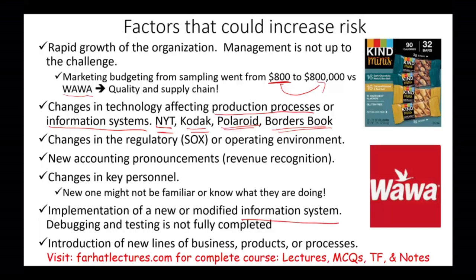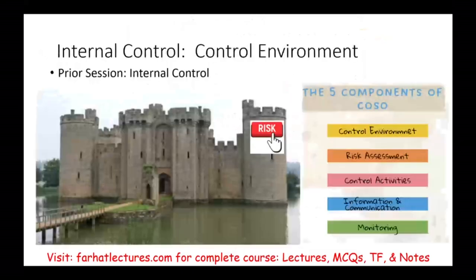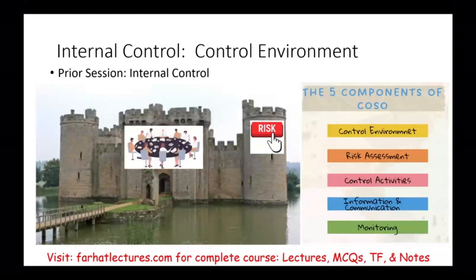All of these are factors that could increase the risk of financial reporting. In this session we looked at risk assessment; in the prior session we looked at the control environment; and in the next session we will look at control activities. Understanding internal control from A to Z — the five components are control environment, risk assessment, control activities, information and communication, and monitoring. As an auditor, we must understand the company's internal control and perform our own risk assessment accordingly.